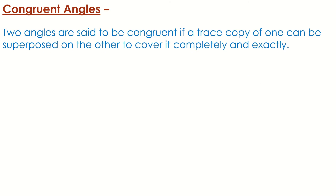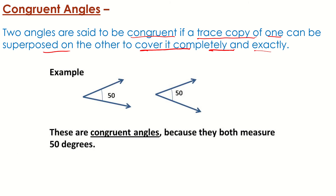Let us talk about congruent angles. Angles which are equal in magnitude or measurement are known as congruent angles. Two angles are said to be congruent if the trace copy of one can be superimposed on the other and they cover each other completely and exactly. Here, there are two angles each measuring 50 degrees, so they can overlap each other exactly and completely — therefore these two angles are congruent.